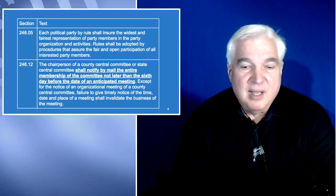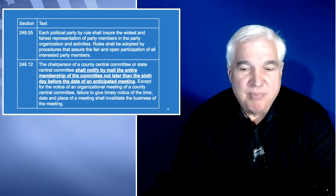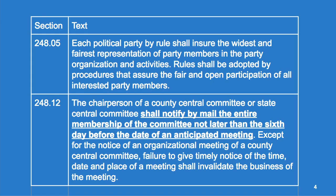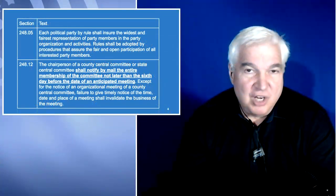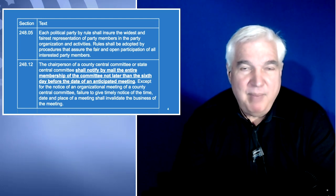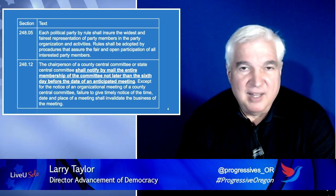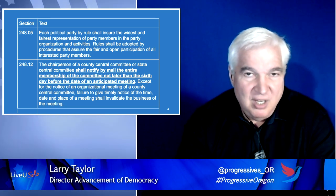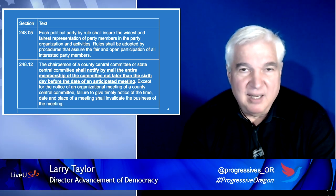The next one is Section 248.12. The chairperson of a county central committee or state central committee shall notify by mail the entire membership of the committee no later than the sixth day before the date of an anticipated meeting. Except for the notice of an organizational meeting of a county central committee, failure to give timely notice of the time, date, and place of a meeting shall invalidate the business of the meeting. So if you don't meet this notice requirement, the work done during that meeting is invalid.